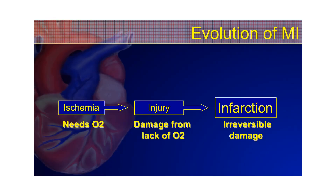I briefly mentioned in video one on STEMI that there is an evolution — an ischemia, injury, infarction evolution. The way to remember that is: ischemia is when the tissue is hungry for oxygen. Injury is when there is some damage from that ischemia. And infarction is when it's irreversible damage or necrosis of that tissue. They show up differently on an EKG.